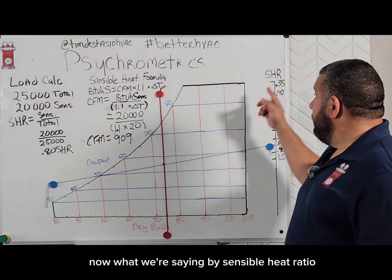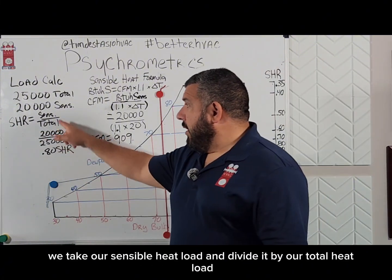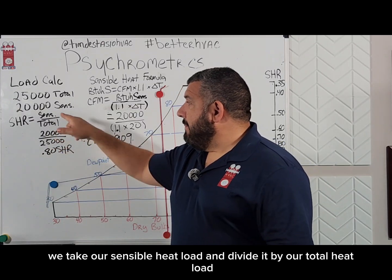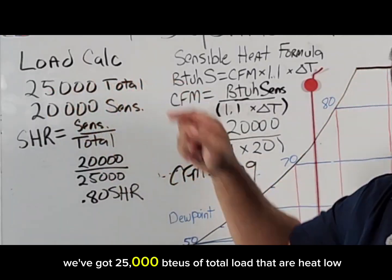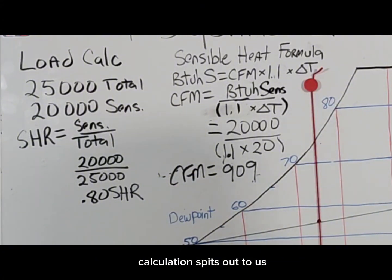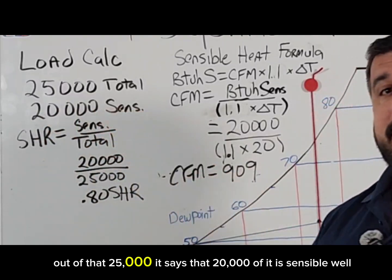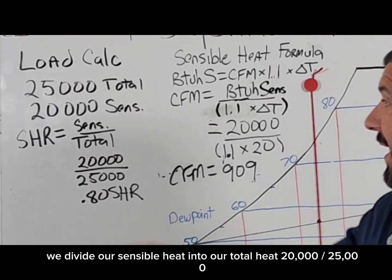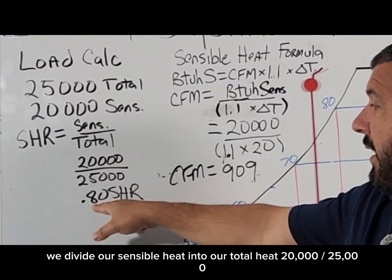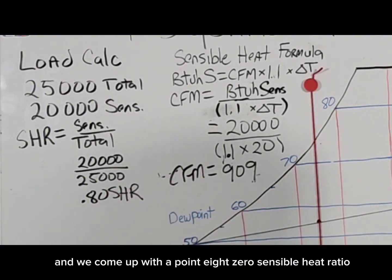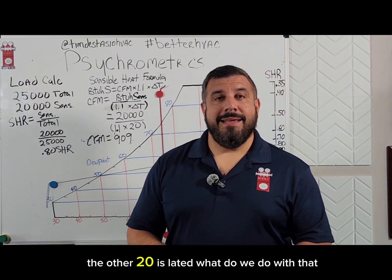What we mean by sensible heat ratio is a formula we use when we do a heat load calculation. We take our sensible heat load and divide it by our total heat load. For example, if we've got 25,000 BTUs of total load and 20,000 of it is sensible, we divide 20,000 by 25,000 and come up with a 0.80 sensible heat ratio — meaning 80% of that load is sensible and the other 20% is latent.